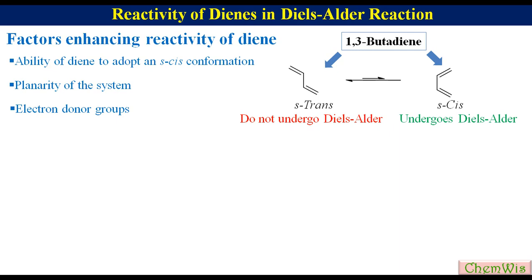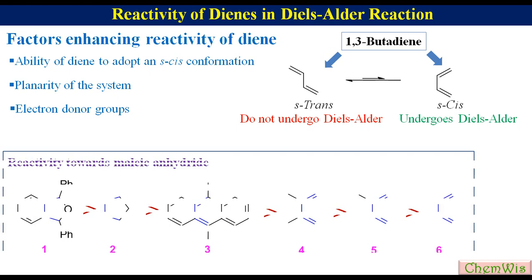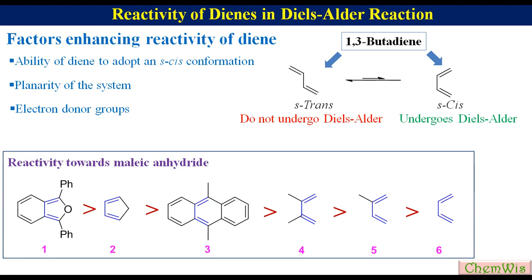Dienes with enforced S-cis conformation have exceptionally high reactivity. For example, the reactivity of compounds 1, 2, and 3 is higher towards the Diels-Alder reaction with maleic anhydride than compounds 4, 5, and 6, because in compounds 1, 2, and 3 the diene is locked in S-cis conformation.